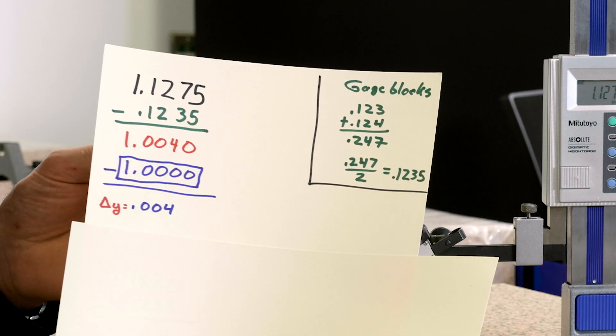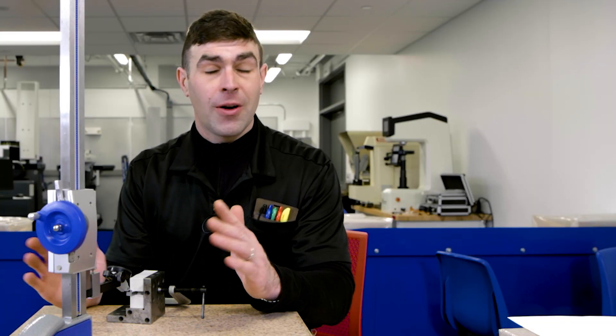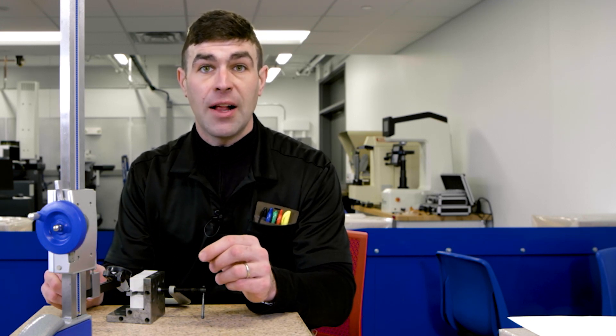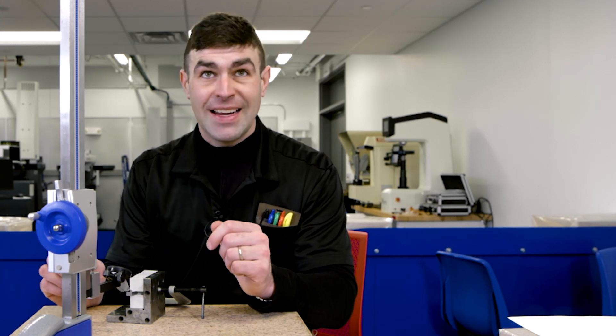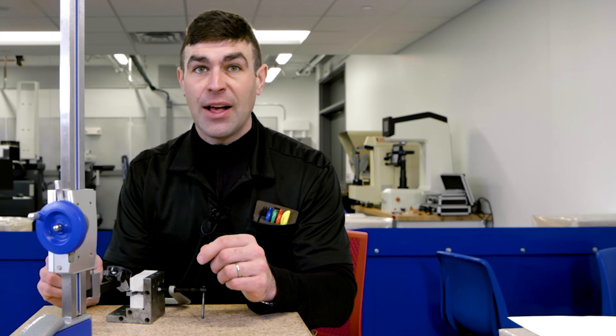That has to be doubled compared to our actual position tolerance, very similar to when we're finding an axis. So we take that four thousandths, it's actually eight thousandths.